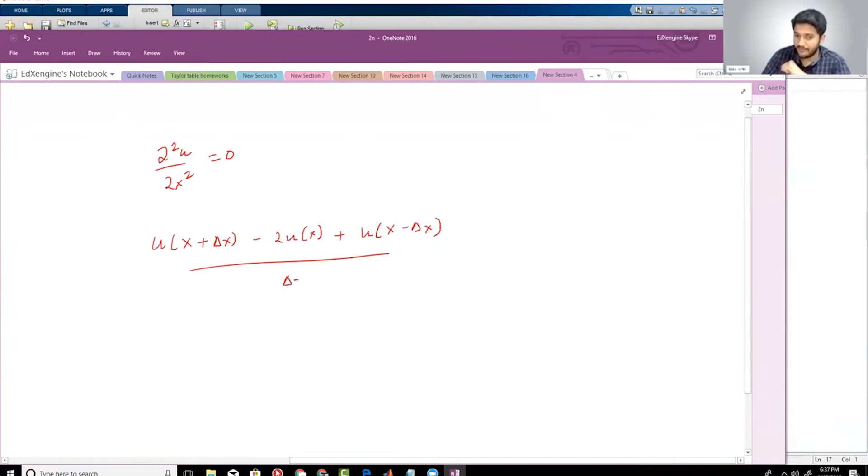This is going to be equal to 0. So if I solve this for u(x), then I will basically get u(x + Δx) + u(x - Δx) divided by 2.